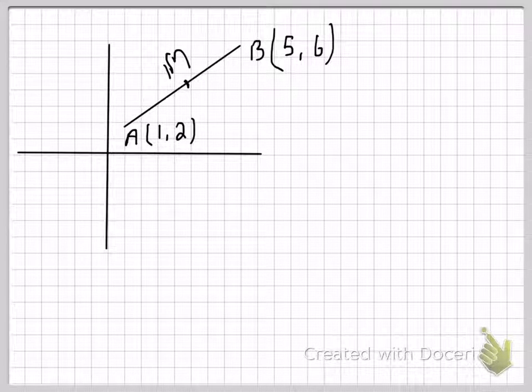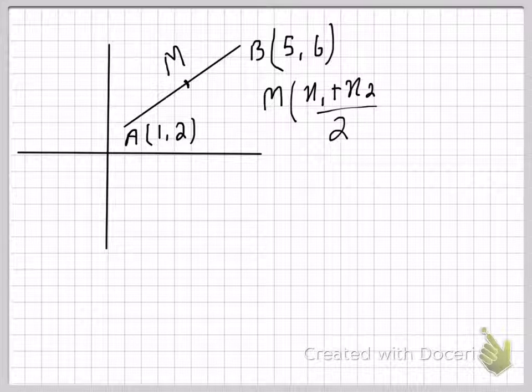Its distance from A will be the same as its distance from B. And the formula for midpoint is x1 plus x2 over 2, y1 plus y2 upon 2.